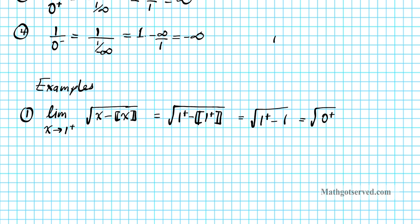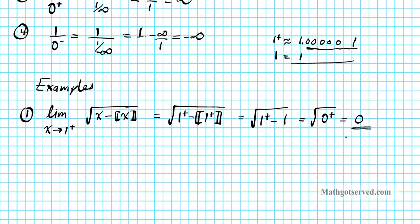So after substitution we have the square root of zero from the right. One from the right is like 1.0001 and subtracting one leaves that really small number, which is zero from the right. Taking the square root of a really, really small number close to zero gives an infinitely small number which is also zero. So the answer for example one is zero.